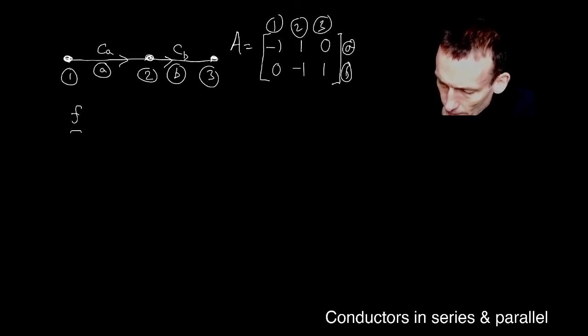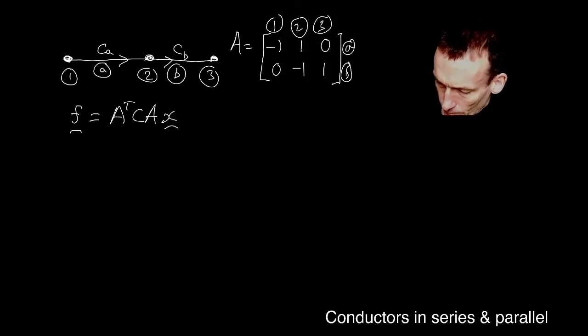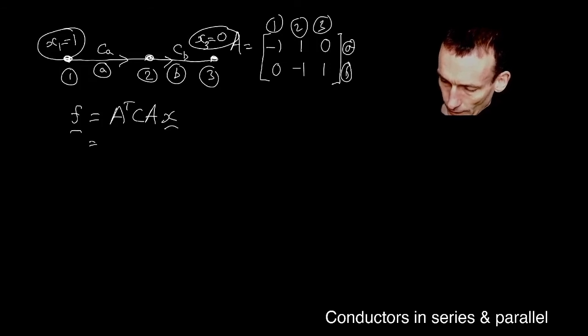Let's think about our F matrix now, our F vector. We know from the general theory that it's this. Well, let's think about F. F, of course, if we're going to have unit potential there and ground this one.